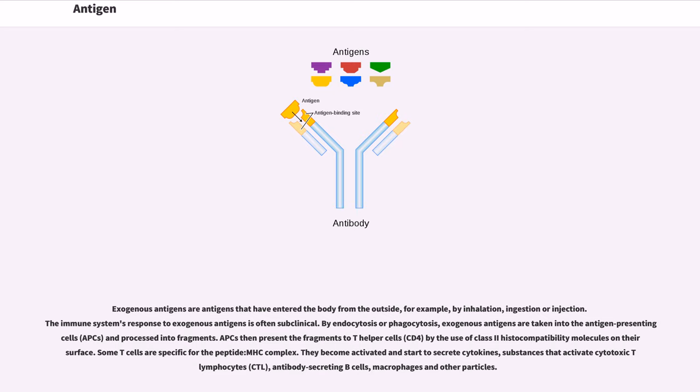By endocytosis or phagocytosis, exogenous antigens are taken into the antigen-presenting cells, APCs, and processed into fragments. APCs then present the fragments to T helper cells, CD4, by the use of class 2 histocompatibility molecules on their surface.